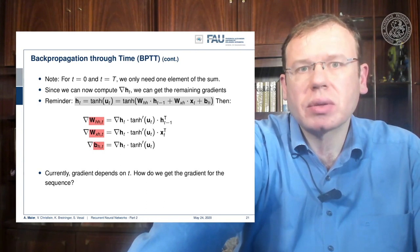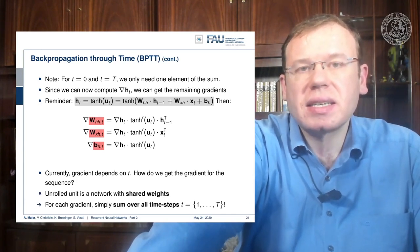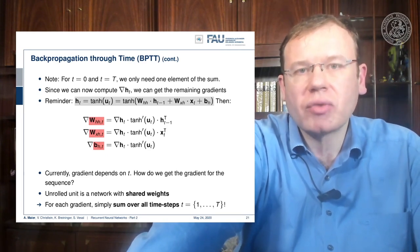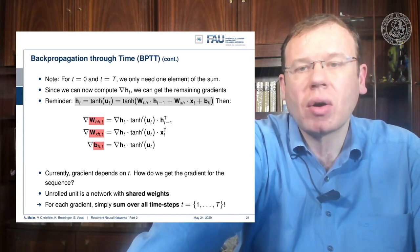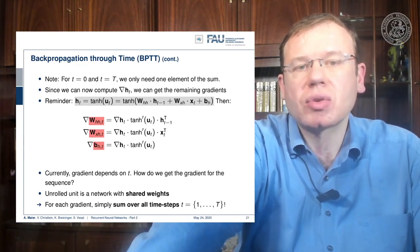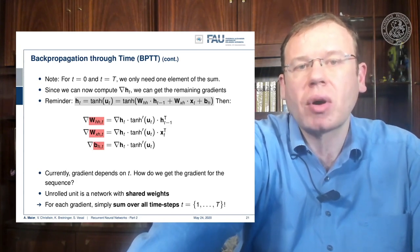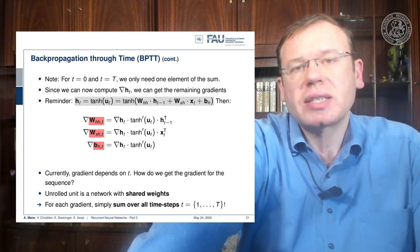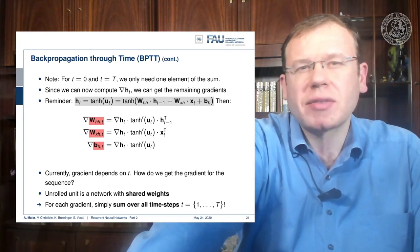The gradients are dependent on t. The network in the unrolled state is essentially a network of shared weights, which means we can update simply by summing over all time steps. This allows us to compute all weight updates at every time t, and the final gradient update is the sum of all those gradient steps. So we've seen how to compute all these steps — and yes, it's about five lines of pseudocode.